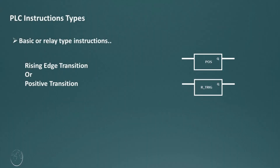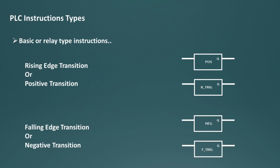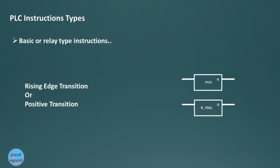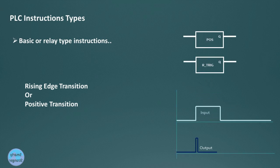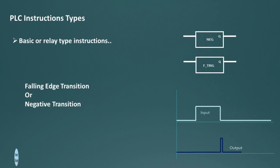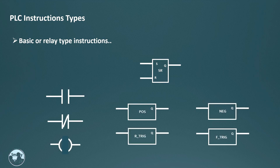Now let's look at positive or rising edge detection instructions and negative transition or falling edge detection instructions. Different PLCs use different names for these instructions. Their working concept is roughly the same. The positive transition instruction detects the positive transition of an input signal — a state change from low to high — and gives a high output for one cycle. The negative transition instruction detects a signal change from high to low and also gives a high output for one cycle.